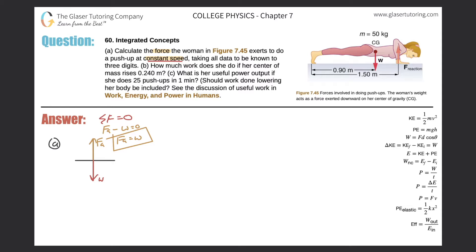So the force applied is equal to mg. So her mass was 50 kilograms—50.0 because I said it's known to three digits—and then gravity is 9.80. So here we have 50 times 9.8, and we get 490 newtons.